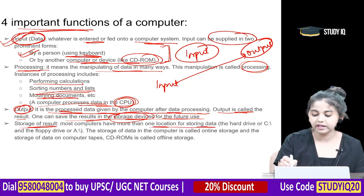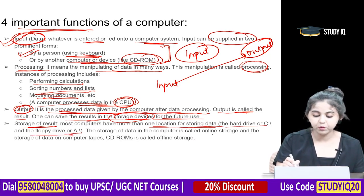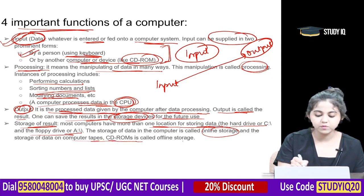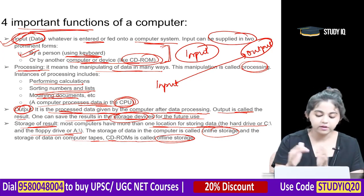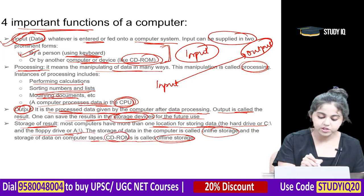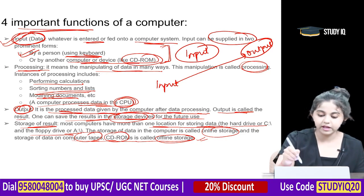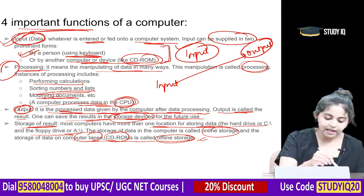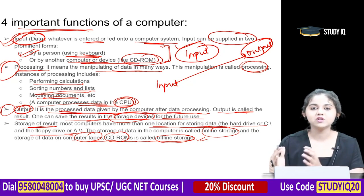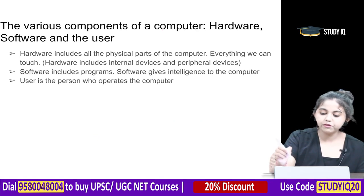Most computers have more than one location for storing data — a hard drive, C drive, or floppy drive. The storage of data in a computer is called online storage, and storage on tape or CD-ROMs is called offline storage. The four important functions performed by any computer are: input, processing, output, and storage of results.